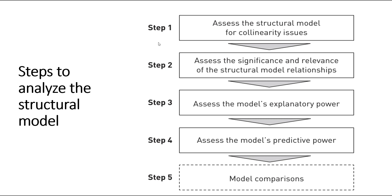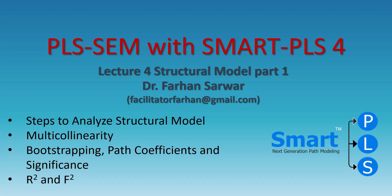Step 1 is to assess the structural model for collinearity. Step 2 is to assess the significance and relevance of structural model relationships — finding path coefficients and doing hypothesis testing. Step 3 is to assess the model's explanatory power using R² and F² statistics. Step 4 assesses predictive power using PLS Predict. Step 5 compares different models for model fit. We will cover steps 1 through 3: multicollinearity, path coefficients via bootstrapping, and explanatory power using R² and effect size F².